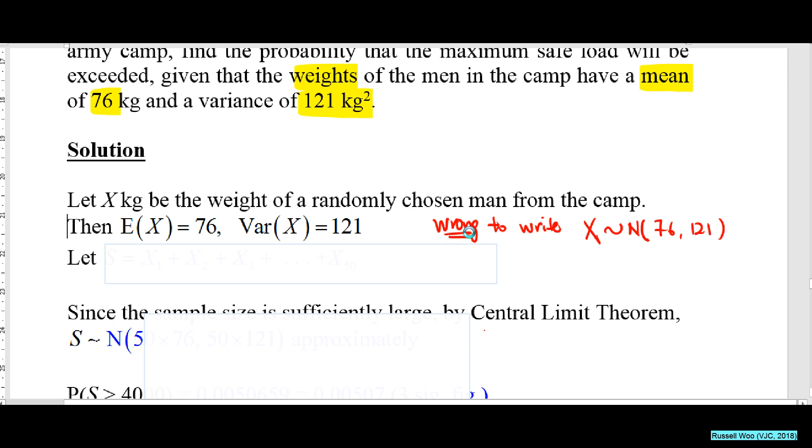Now what do we want? We want the weights of 50 randomly chosen men. So first I will let S be equals to X1 plus X2 all the way to X50.